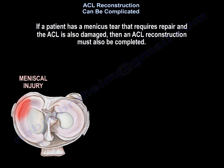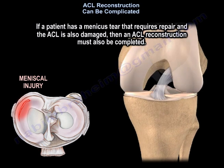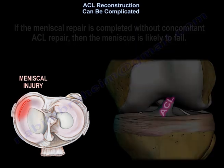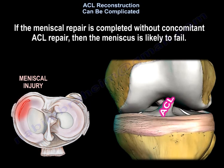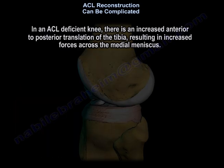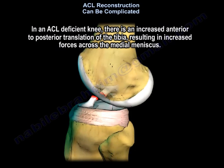If a patient has a meniscus tear that requires repair and the ACL is also damaged, then an ACL reconstruction must also be completed. If the meniscal repair is completed without concomitant ACL repair, then the meniscus is likely to fail. In an ACL-deficient knee, there is an increased anterior to posterior translation of the tibia, resulting in increased forces across the medial meniscus.